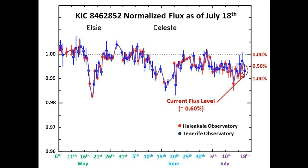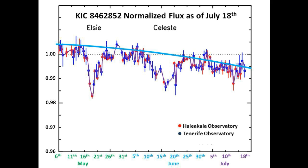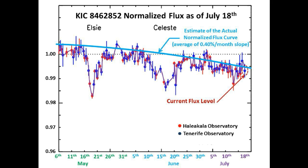Now we will show you the estimated accelerating long-term dimming curve to serve as an alternative nominal flux demarcation. The blue curve is the estimated normalized flux curve, and the instantaneous tangential slope of this curve was calculated at 0.40% per month. Fitting the long-term accelerated dimming curve to the 74-day graph, we get this blue curve.